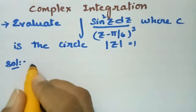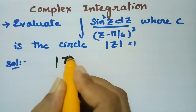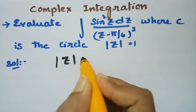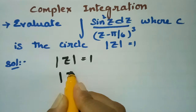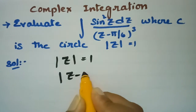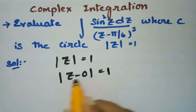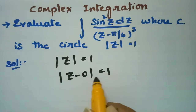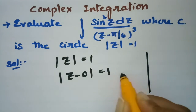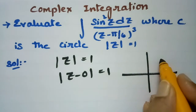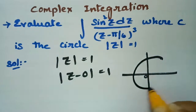Since |z| = 1, this means |z - 0| = 1, which is a circle equation with center 0 and radius 1.